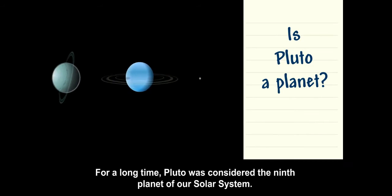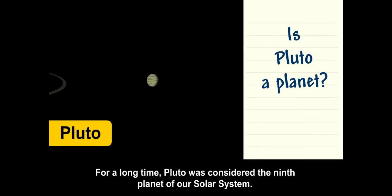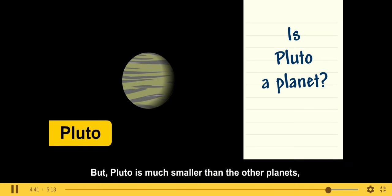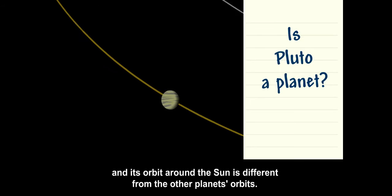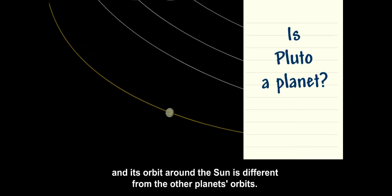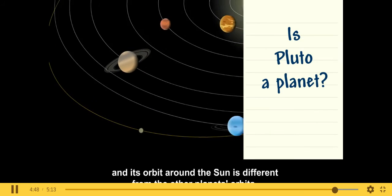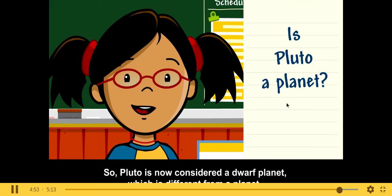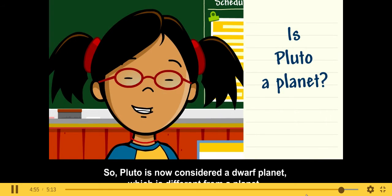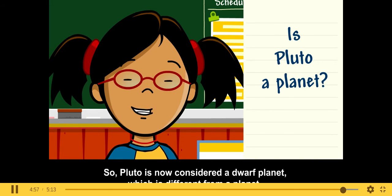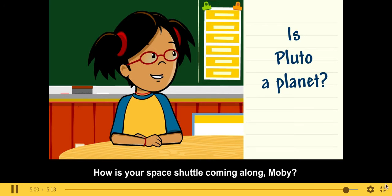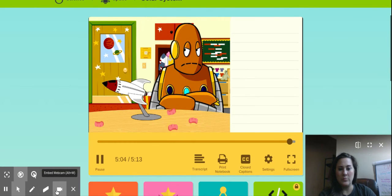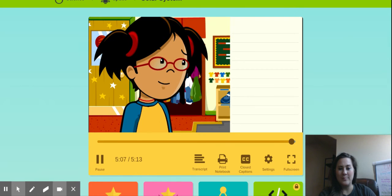Pluto is considered the ninth planet of our solar system, but Pluto is much smaller than the other planets. And its orbit around the sun is different from the other planets' orbits. So, Pluto is now considered a dwarf planet, which is different from a planet. How is your space shuttle coming along, Moby? I don't think that'll make it to space.